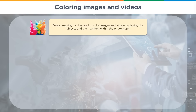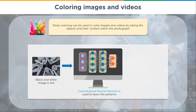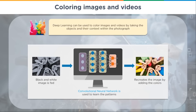Coloring images and videos: deep learning can be used to color images and videos by analyzing objects and their context within the photograph. A black-and-white image is fed into a convolutional neural network, which is trained on hundreds of black-and-white photos that already have known color versions. It then recreates the image by adding colors. This is also used in the movie industry to add special effects, and you can even build your own neural network to do it.